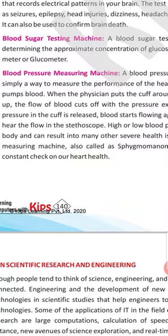Next one: Blood Pressure Measuring Machine. All of you are familiar with this one — we have seen it so many times. It is a machine where a cloth cuff is strapped on our hand. After that, the doctor pushes the pump, and it will show the pressure of the blood. The doctor will listen with a stethoscope. It will show if it is high — then BP high; if it is low — then BP low. This machine is known as the Blood Pressure Measuring Machine.